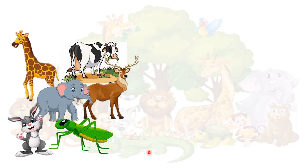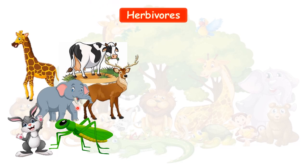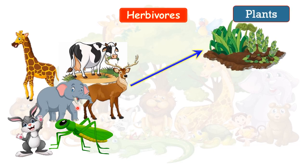Children, can you identify the animals given on the screen? Giraffe, cow, deer, elephants, rabbit, grasshopper. Grasshopper is not an animal — it is an insect. Do you know what they eat? They eat plants, so they come in the herbivores category. Animals that eat only plants are known as herbivores.